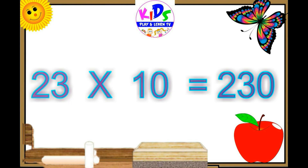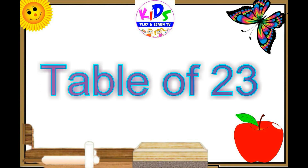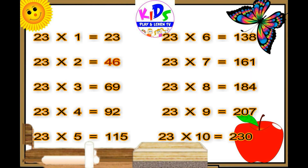23 tens are 230. Let's repeat. 23 ones are 23, 23 twos are 46, 23 threes are 69, 23 fours are 92, 23 fives are 115, 23 sixes are 138, 23 sevens are 161, 23 eights are 184, 23 nines are 207, 23 tens are 230.